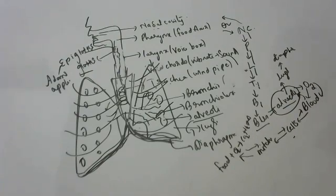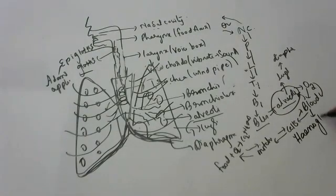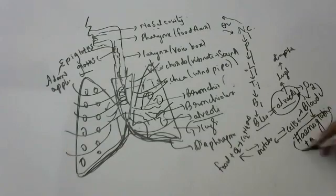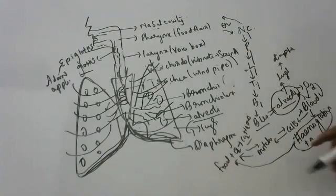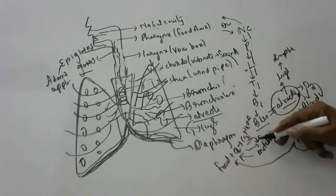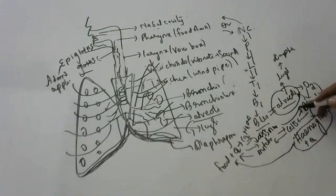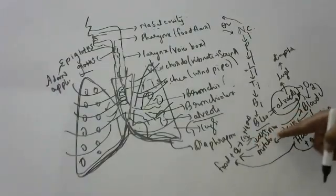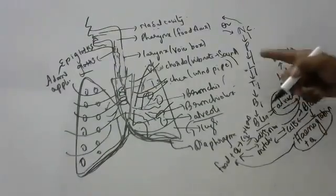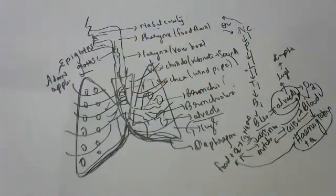When oxygen enters the blood, the vehicle that carries it is hemoglobin. Hemoglobin carries oxygen by forming oxyhemoglobin and delivers it to the mitochondria. However, hemoglobin does not carry carbon dioxide back. Instead, CO2 dissolves in the blood and travels back to the alveoli. From the alveoli, CO2 goes through bronchioles, bronchi, trachea, larynx, pharynx, and out of the body.